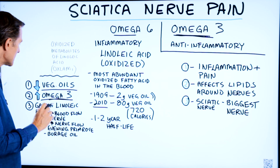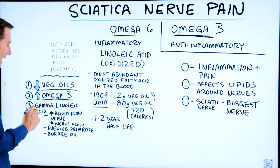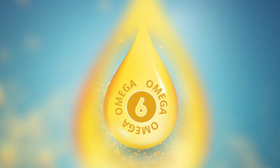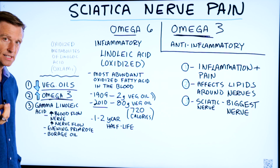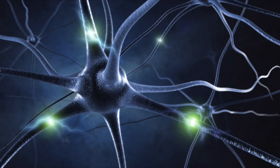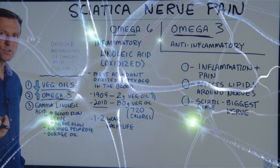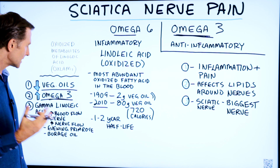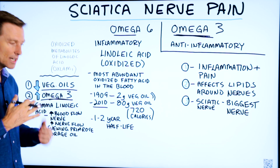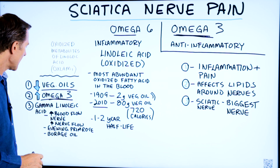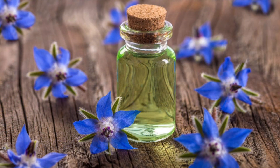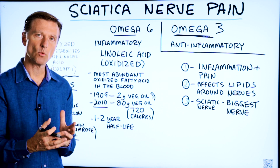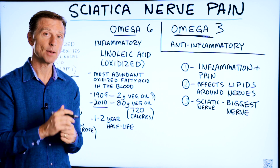The last thing I would recommend is to get some gamma-linolenic acid. Now, this is an omega-6 fatty acid, but it's more anti-inflammatory. It can specifically increase the blood flow to the nerve itself as well as increase nerve transmission. There's been some interesting nerve conduction velocity testing using this, showing improvement in the conduction of that nerve. That would be either evening primrose oil or borage oil. Give it some time to work, and in the meantime, watch my other videos on sciatica — I'll put the link down below.